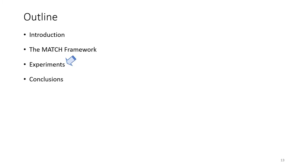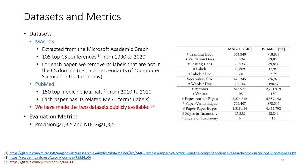Now we would like to show our experimental results. We use two datasets, both from the academic paper domain. The first one is extracted from the Microsoft Academic Graph. It has papers published in 105 top CS conferences from 1990 to 2020. And for each paper, we remove its labels that are not in the CS domain.